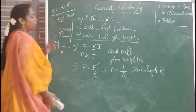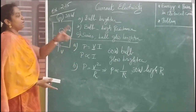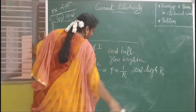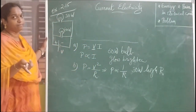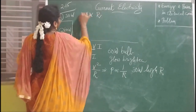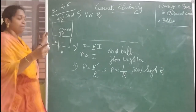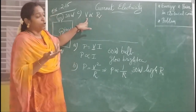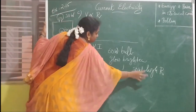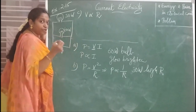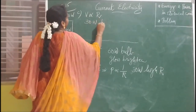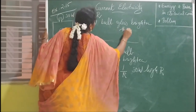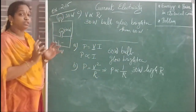For the third question, when connected in series, current remains the same through both bulbs. Using the equation P = I²R, since current is constant, power is directly proportional to resistance. The 30-watt bulb has higher resistance, so it will have more voltage drop and will glow brighter than the 60-watt bulb.